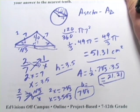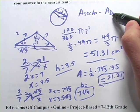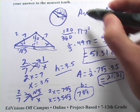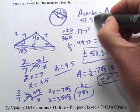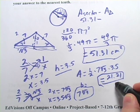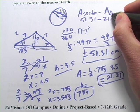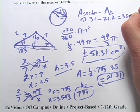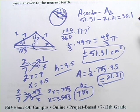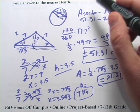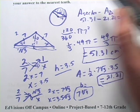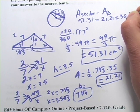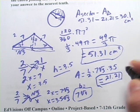The area of the segment is the area of the sector minus the area of the triangle. The sector was 51.31, minus the triangle area of 21.21, gives 30.1. This is an area in centimeters, so that's 30.1 centimeters squared.